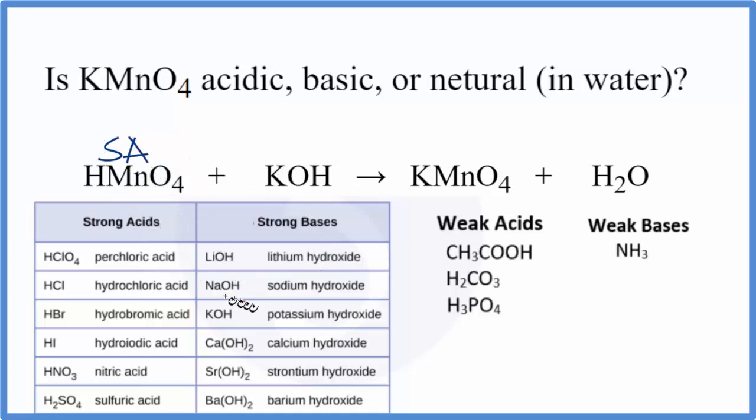KOH, one you should know—potassium hydroxide—that's a strong base. So we're going to write SB above that. So we know the strength of the acid and the base.